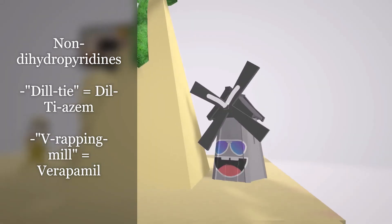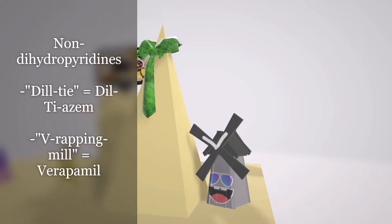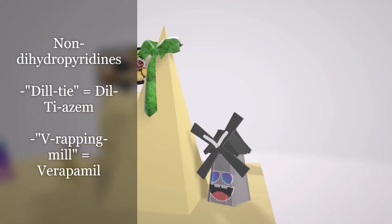And there's a mill that wraps — it raps 'Goodbye Pharaoh' — and it has a V on it. So this is the 'V-wrapping mill' for verapamil. So verapamil and diltiazem are the non-dihydropyridines we want to be aware of.